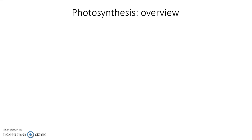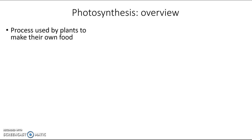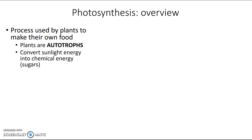As you probably already know, photosynthesis is a process used by plants to make their own food. Organisms that can make their own food are referred to as autotrophs, so plants are autotrophs. What they accomplish in photosynthesis is converting sunlight energy into chemical energy in the form of sugars.